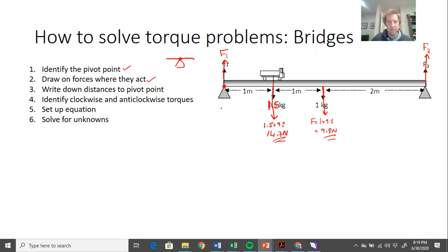Write down the distances to the pivot point. F1 is at the pivot point, so it's got a distance of zero. The truck has a distance of one meter, the weight of the bridge itself has a distance of two meters, and F2 on the other side has a distance of four meters.